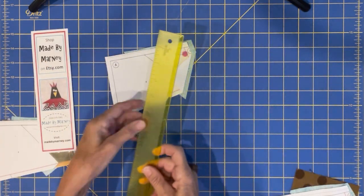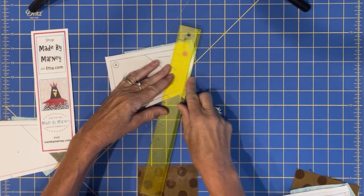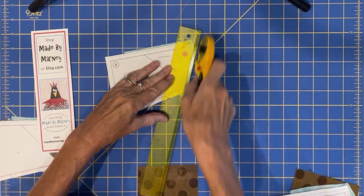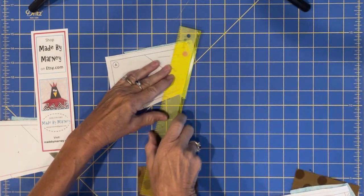I will take my add-a-quarter ruler, line it up, butt it up because it has a nice little ridge. Butt it up with the fold and trim off what you don't need because there was fabric here that I got rid of.